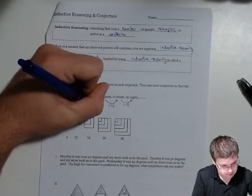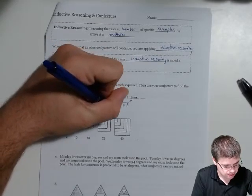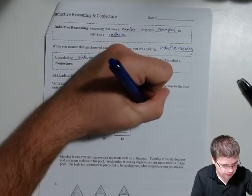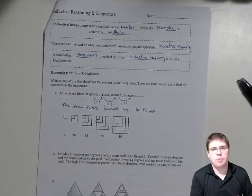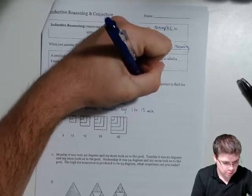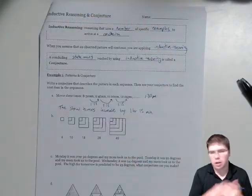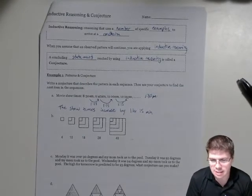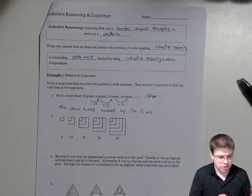So our conjecture based on our observed pattern is that the showtimes increase by one hour and 15 minutes. And so our conjecture about what the next showtime would be, the next term in the sequence, would be to add an hour and 15 to this, so it puts us at 1:30 p.m. And that would be our conjecture. Whether or not it's true, inductive reasoning doesn't give us a lot of proof, right? It's just kind of coming up with these theories, these conjectures.